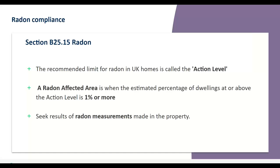Moving on to radon. During the conveyancing process, certain documents are used to ask questions about radon gas — commonly the CON-29 local authority search and the TA-6 form completed by the seller. Radon appears under section 3.14 of the CON-29, essentially asking whether the property is in a radon affected area as identified by Public Health England or Public Health Wales. The data commonly used in the CON-29 is freely available and accurate to one kilometre. We also have the TA-6 form — bearing in mind caveat emptor, buyer beware, as this form is completed by the seller.